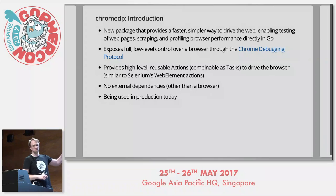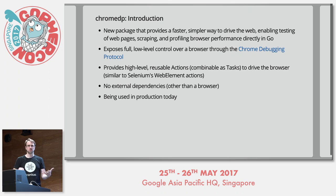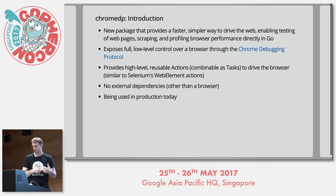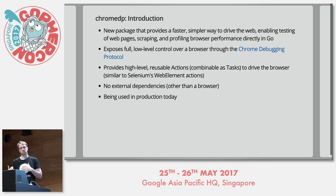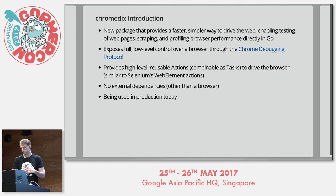ChromeDP is a package that provides a direct way to control Chrome, or any browser that supports the Chrome Debugging Protocol — hence the name ChromeDP — directly through Go. No external dependencies are needed. You don't need to use a Selenium farm, you don't need to use ChromeDriver or any of that kind of stuff. It exposes really low-level actions inside a web browser, which is much more powerful than what you could get using web elements in Selenium or other approaches.